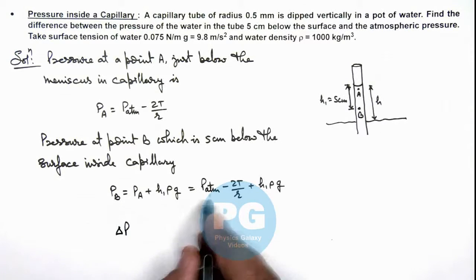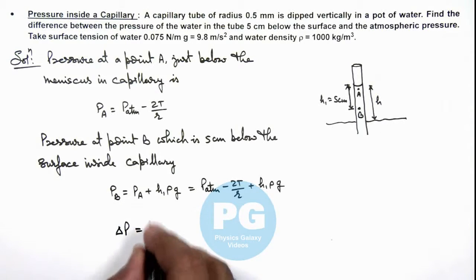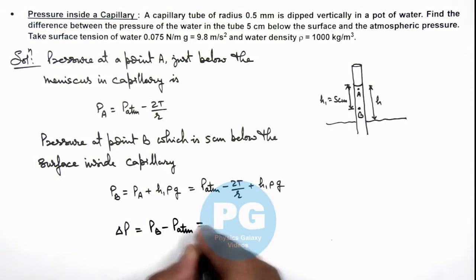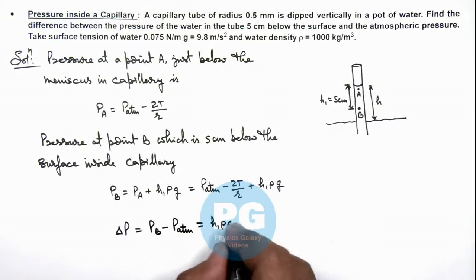...point B and atmosphere, which is P_B - P_atm, then this value is h₁ρg - 2T/r.